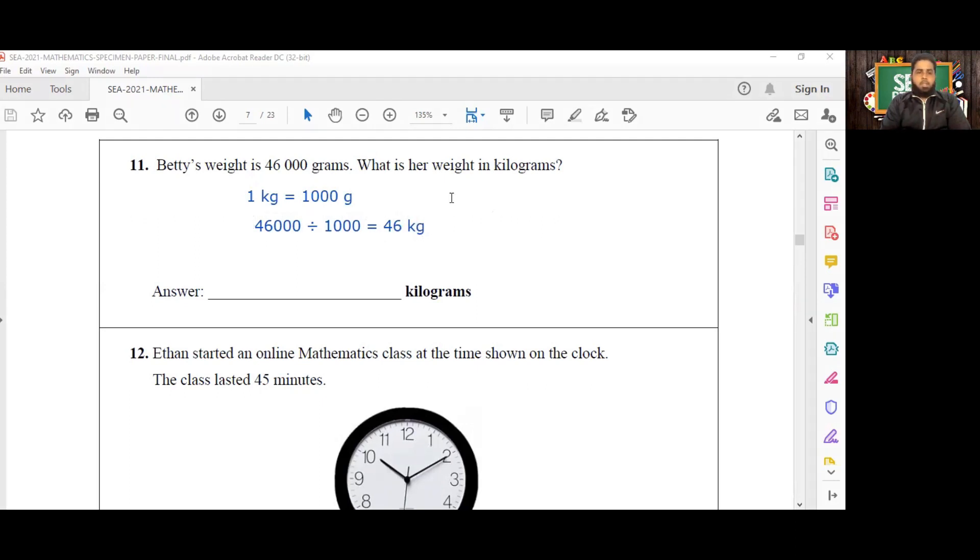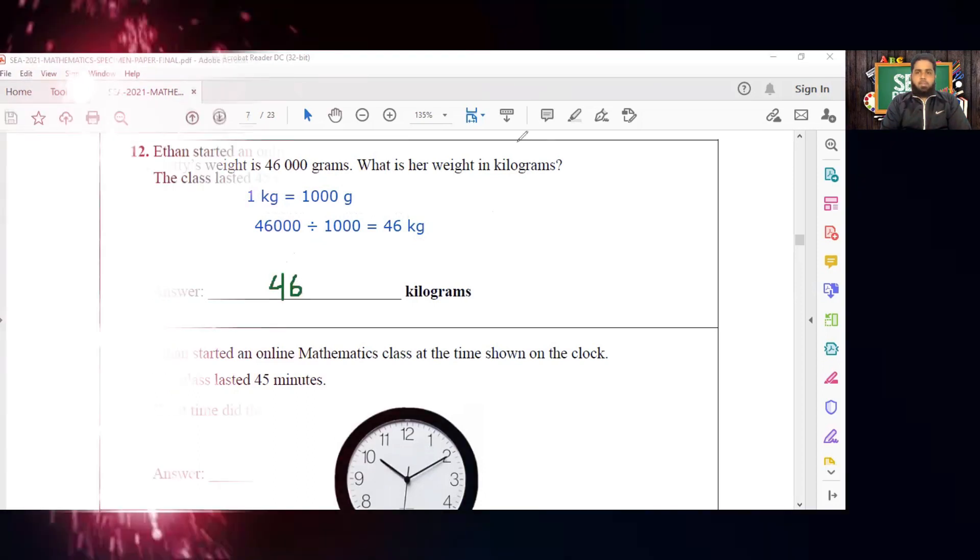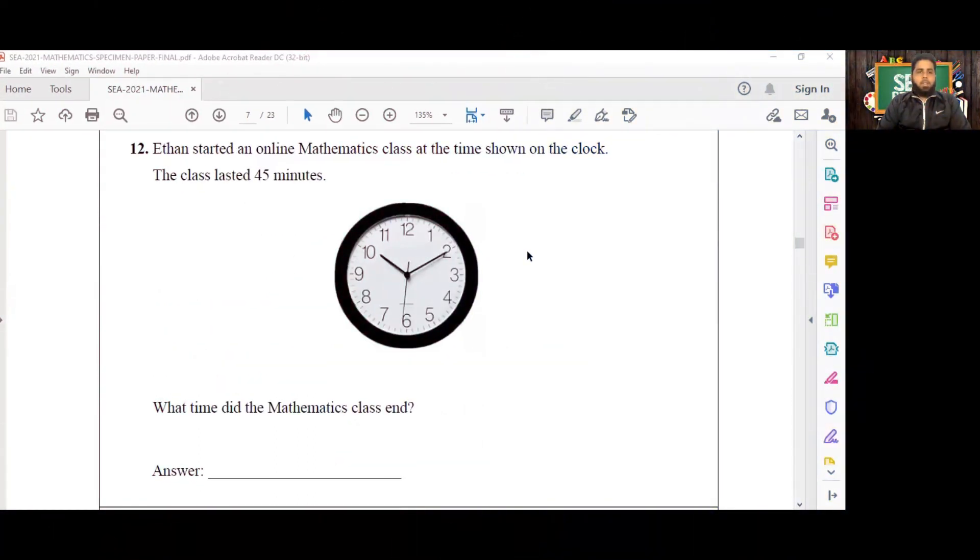Okay guys, so we are on number 12 now. Ethan started an online mathematics class at the time shown on the clock. The class lasted 45 minutes. What time did the mathematics class end? All right, so basically what we need to do here is to read off the time of the class, the time of the beginning of the class.